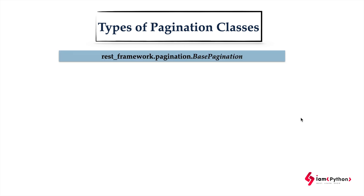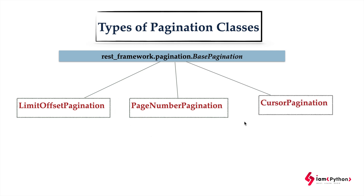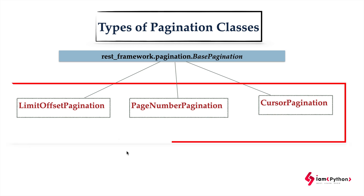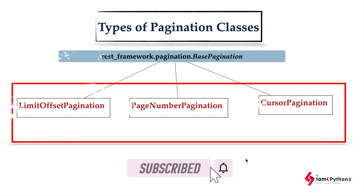The pagination types available in REST Framework are under rest_framework.pagination. The base class is BasePagination, which has three subclasses: PageNumberPagination, LimitOffsetPagination, and CursorPagination. These are the three different pagination classes available. You can apply them either via settings.py or views.py.